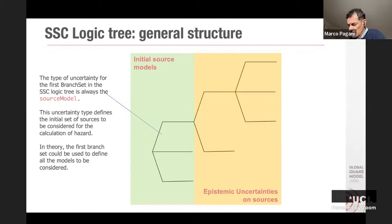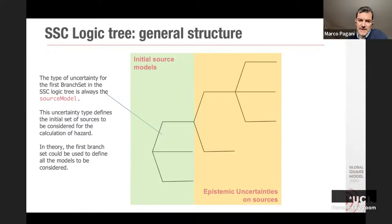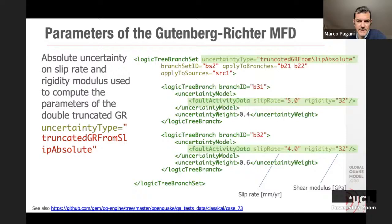In the OpenQuake engine, the user can define the structure of the logic tree — the systematic way we describe all epistemic uncertainties to be considered in the calculation. The engine allows the user, through an XML syntax, to describe the logic tree structure. For uncertainties affecting seismic source characterization, the logic tree starts from the definition of a source model, and all following uncertainties perturb or extend the information initially assigned within that source model.